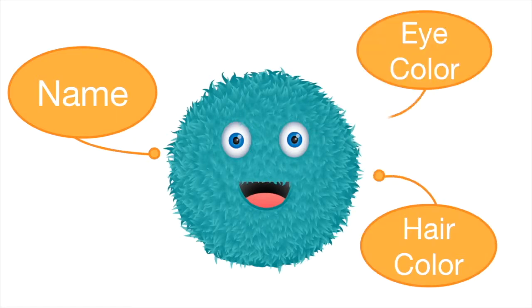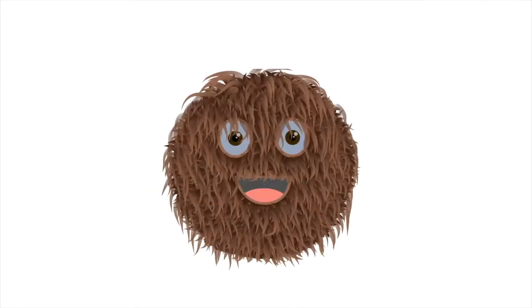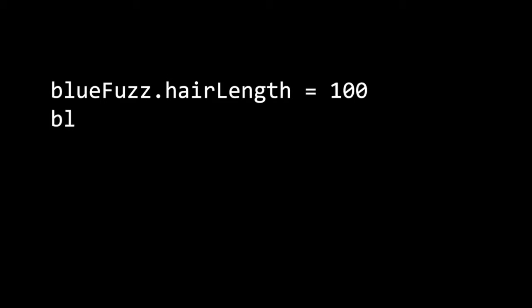Let's talk about how ints are used to store values in a program by revisiting our video game example that we used for strings. We talked about how a character's name, hair color, and eye color are all stored as strings in a video game. But what about how big a character is or how long their hair is? These are all numbered values, so we use ints to tell the computer what the character should look like in the video game when the player sees it on the screen. Integers make it easy for programmers to reuse values in their programs. Ints also allow us to run loops by telling the computer how many times to complete a certain task. This makes it easy for us to carry out complex processes and do so much more with our programs.